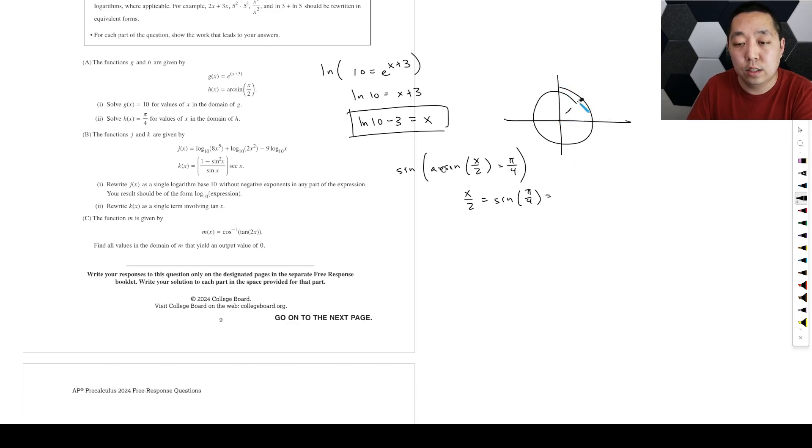It's over here, and that coordinate is root 2 over 2 comma root 2 over 2. And the y value is root 2 over 2. So then multiply through by 2, you get x is equal to square root of 2. That's part A.